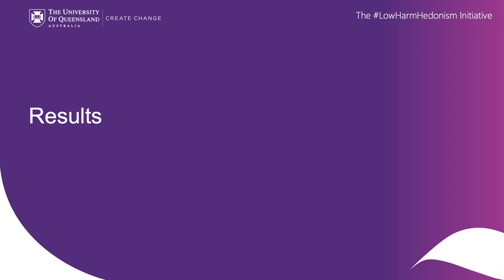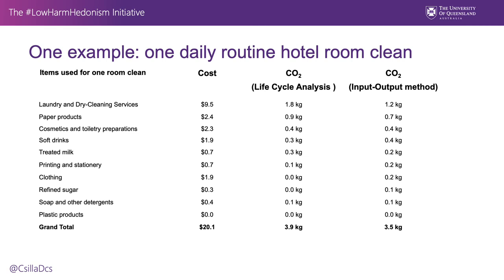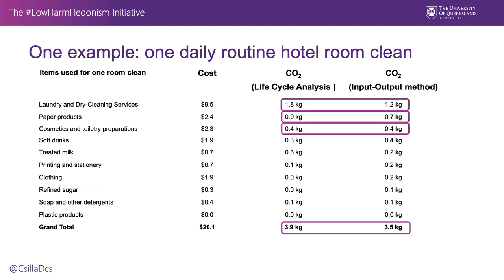Now let's look at the results of our carbon footprint estimations. In this table you can see all components that make up a hotel room clean in the left column and the cost of each one of those components next to it. You can see the carbon emission calculation results for both methods for each of those components. The total emission values at the very bottom are within 10% of each other, showing that input-output analysis can be used instead of the more complicated life cycle assessment. Both approaches were also able to identify the most problematic areas: laundry and dry cleaning service, paper products, and cosmetics and toiletries.